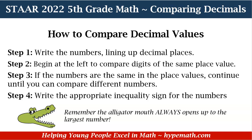So whenever we compare decimals, step 1: write the numbers and line them up by the decimal places. Step 2: begin at the far left to compare the digits of the same place value — meaning look at what is in the ones place, what's in the tens place, what's in the tenths place. Step 3: if the numbers are the same in the place values, continue until you can compare different numbers.